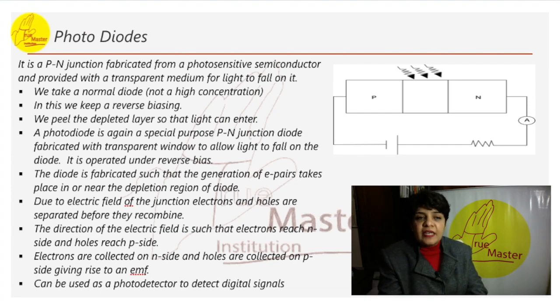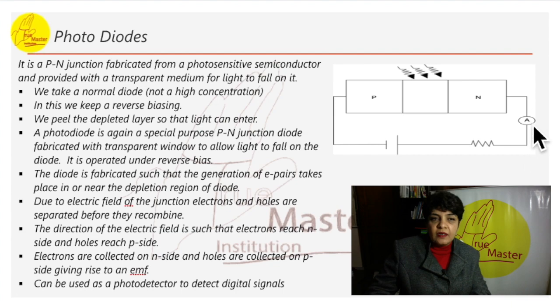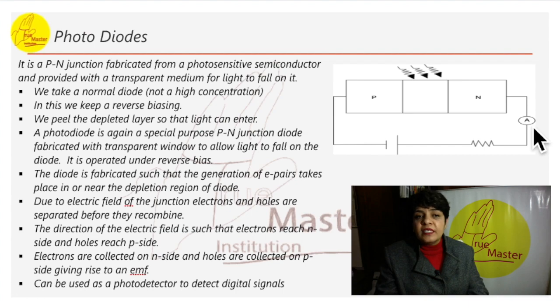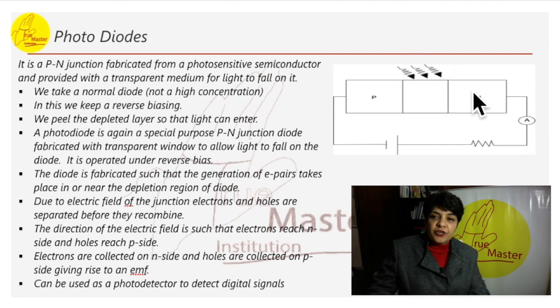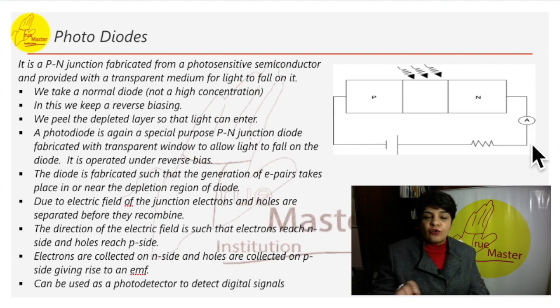Here we have connected an ammeter which has been connected here that will count the current signal. Therefore, this device can be used as a photodetector to detect the digital signal. When the light is coming from here, one electron will keep passing. It is very sensitive device to detect the light.